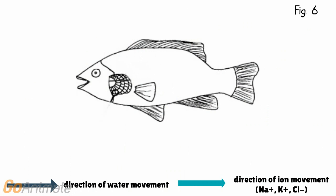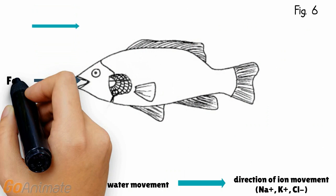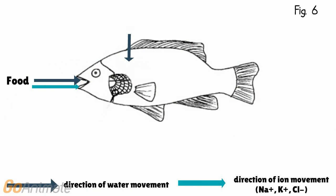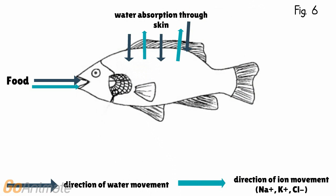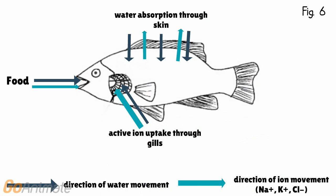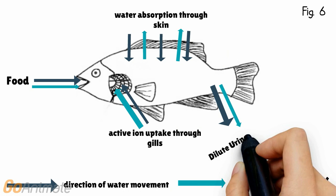In freshwater fish, water intake happens along with food intake. Water is also absorbed through gills and skin by simple passive diffusion. Because of the continued diffusion of water by osmosis into the fish, sodium and chloride ions also diffuse out of the fish down their concentration gradient. Special cells in the gill lamellae contain sodium and chloride pumps — special enzymes that move ions up their concentration gradient using ATP to maintain higher ion concentrations in the fish. The fish also produce a large volume of dilute urine.